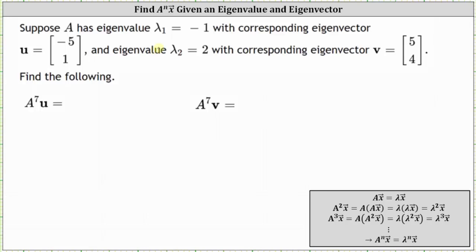Suppose matrix A has an eigenvalue of negative one with the corresponding eigenvector u, and an eigenvalue of two with the corresponding eigenvector v. We're asked to find matrix A raised to the power of seven times eigenvector u, as well as matrix A to the power of seven times eigenvector v.